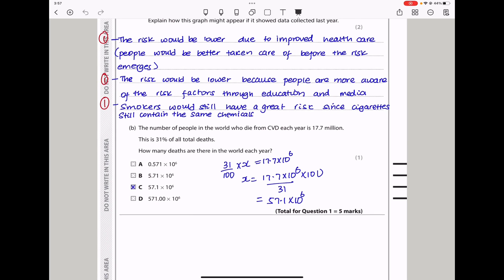Moving on to part B, they say the number of people in the world who die from CVD each year is 17.7 million. This is 31% of all the total deaths. How many deaths are there in the world each year? If 31 over 100 times the total deaths is equal to that, we can make this the subject and find the total deaths in a year. So it's 57.1 times 10^6, and C is the answer.